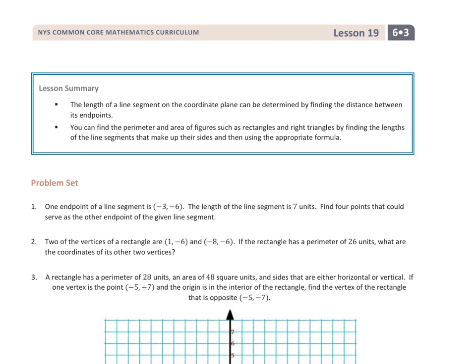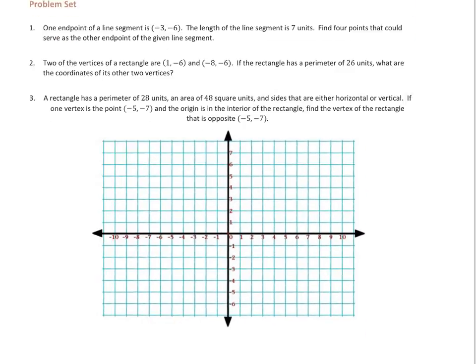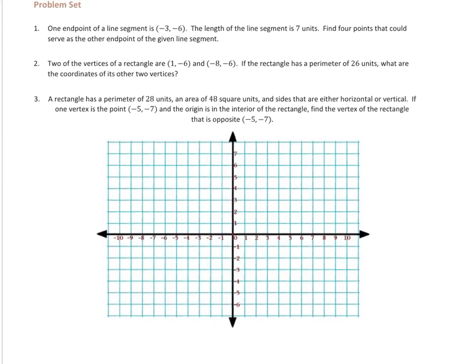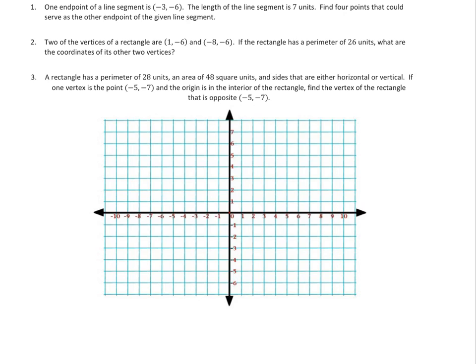What I'm going to do now is jump to question 2, just to get started. So I have two of the vertices of a rectangle are 1, negative 6, and negative 8, negative 6. If the rectangle has a perimeter, meaning the distance around the outside, of 26 units, what are the coordinates of the other two vertices?